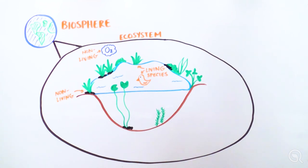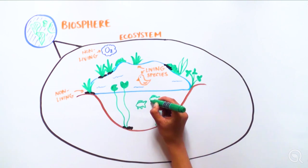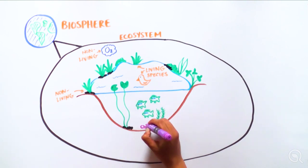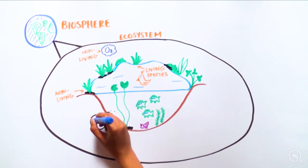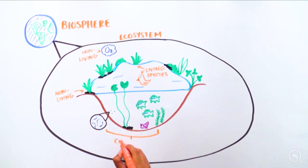Smaller than an ecosystem is a community, or a group of different species that interact in the same area, such as cattail plants, bluegill fish, small crustaceans, and phytoplankton, that all live in freshwater lakes.